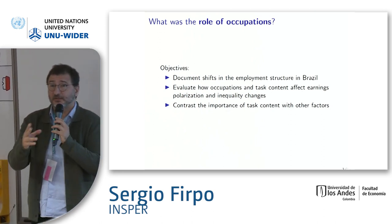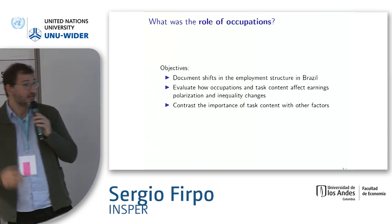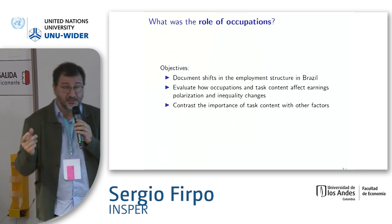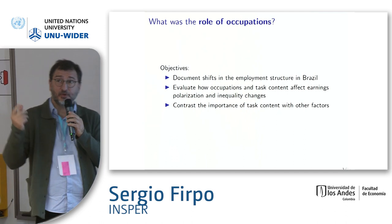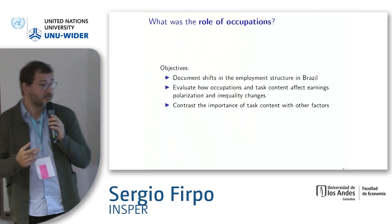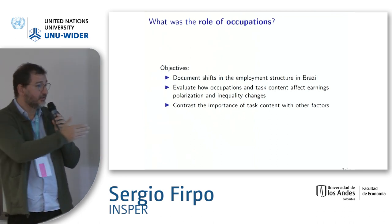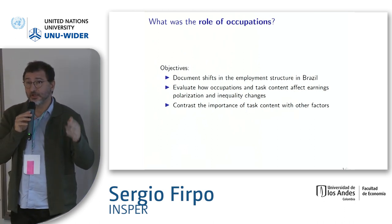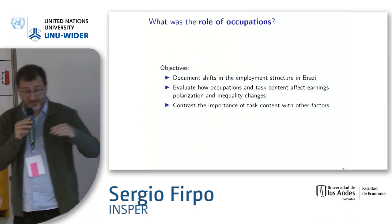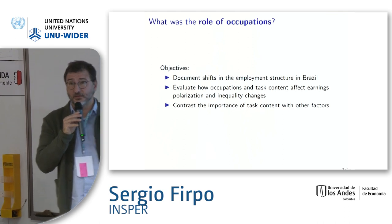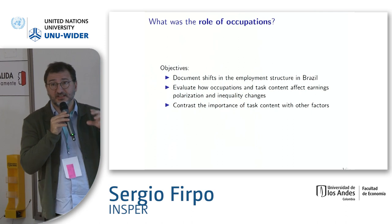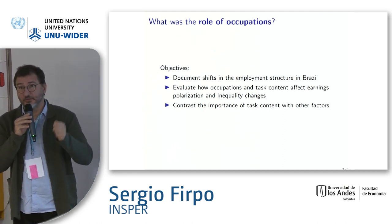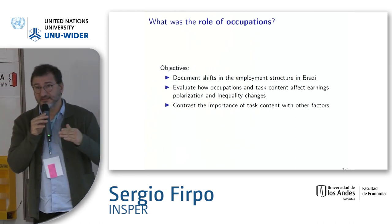There is not much work on the role of occupations in explaining declining inequality in Brazil. What we do is try to understand whether the polarization effect seen in many other countries also occurred in Brazil, and whether the employment structure change had any impact on wage inequality. We decompose those effects into a composition effect and a structure effect — whether it was a change in the proportion of routine-intensive jobs or a change in payment to those jobs.